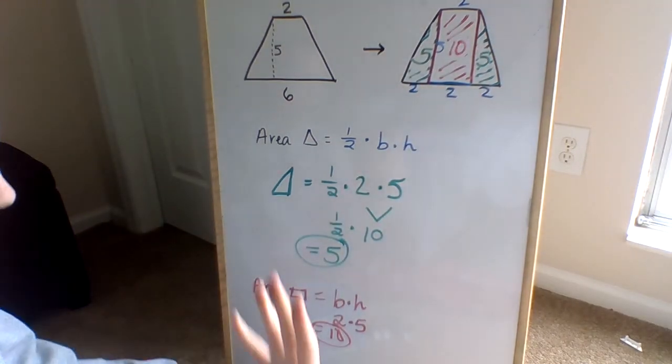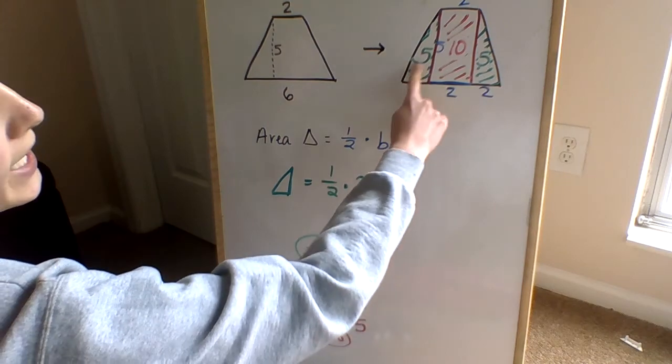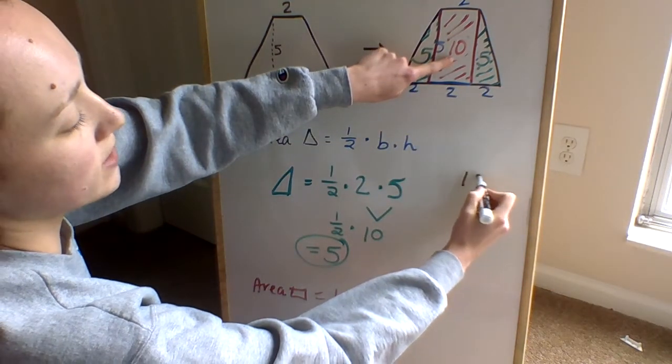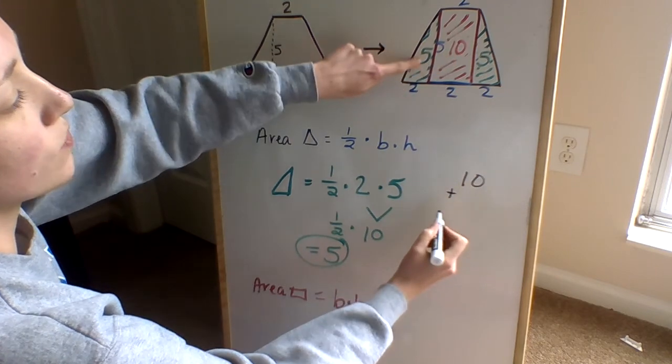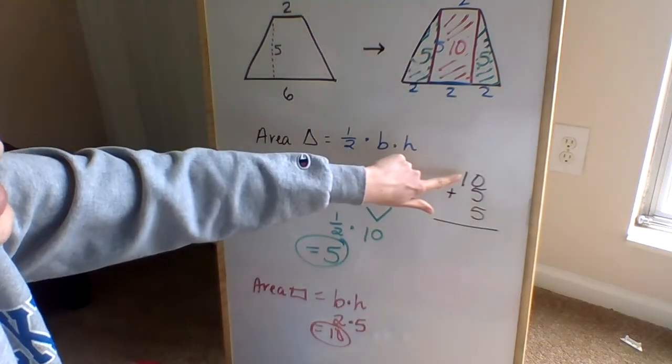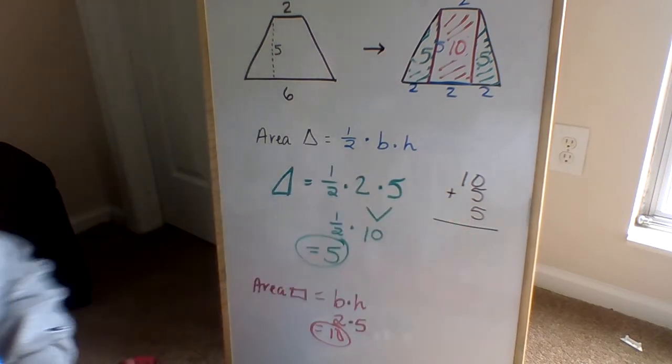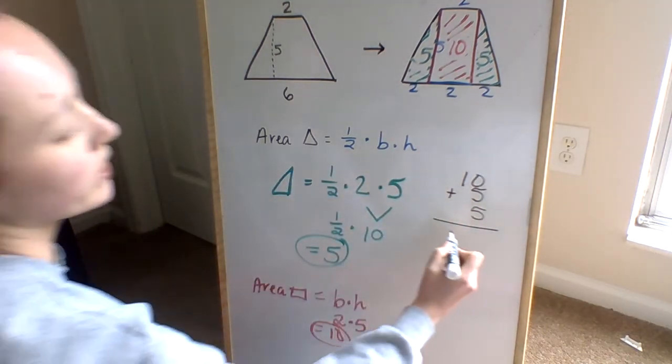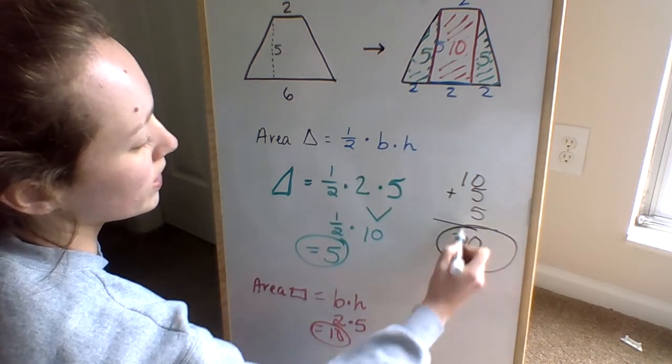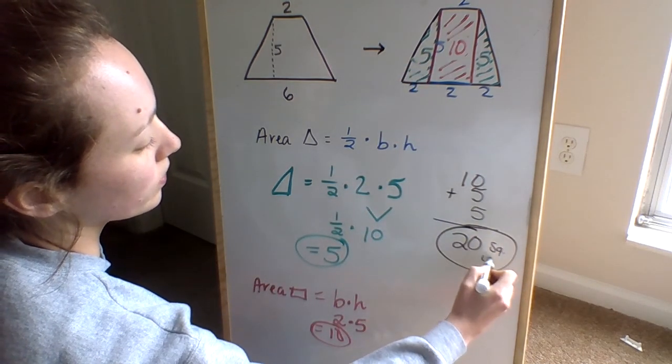Now, in order to get the total area of everything, we need to add up each of these shapes. So let's take our rectangle, we'll add it to our triangle, and we'll add it to our other triangle. What is ten plus five plus five? Good, it is twenty. So the area of our trapezoid is twenty square units.